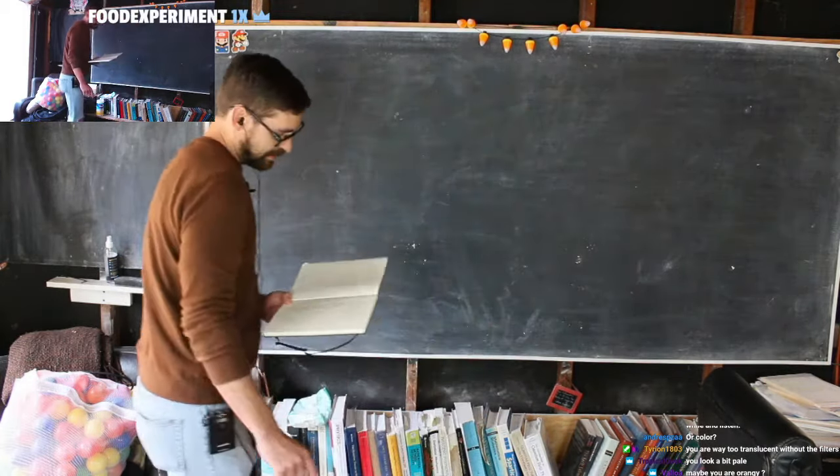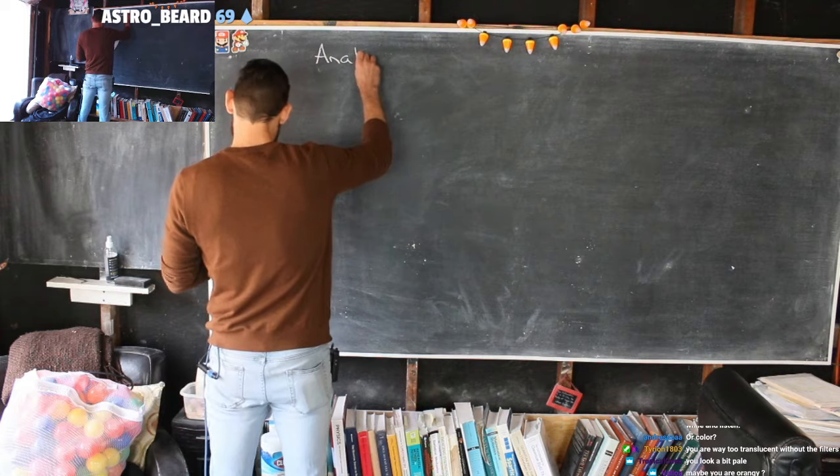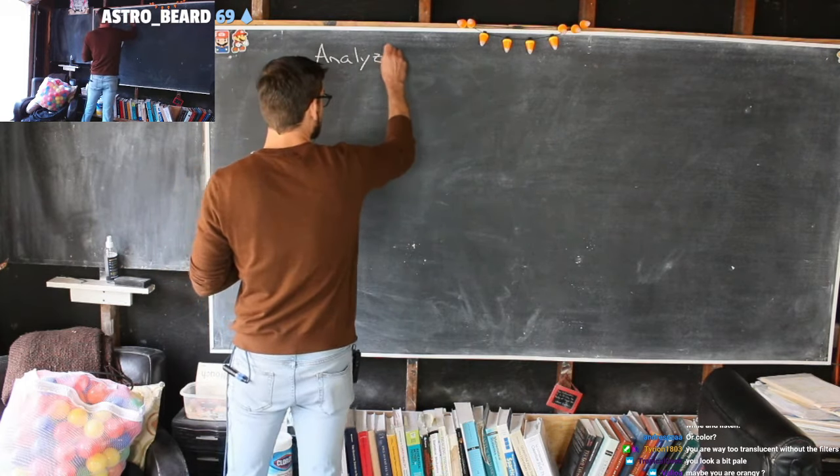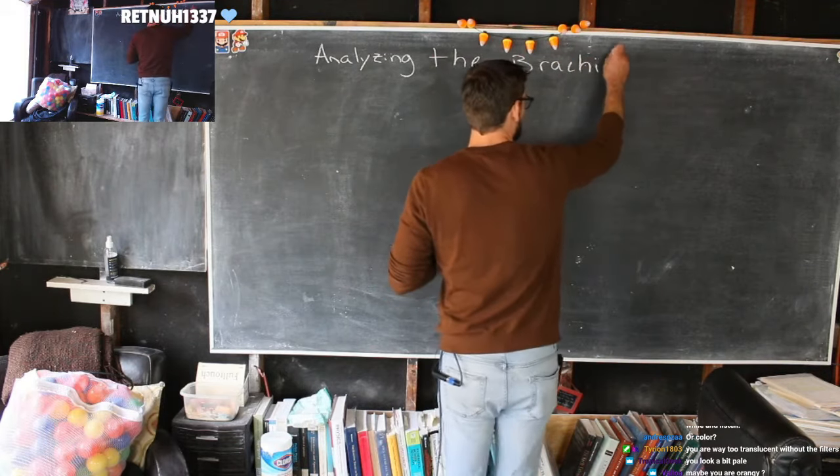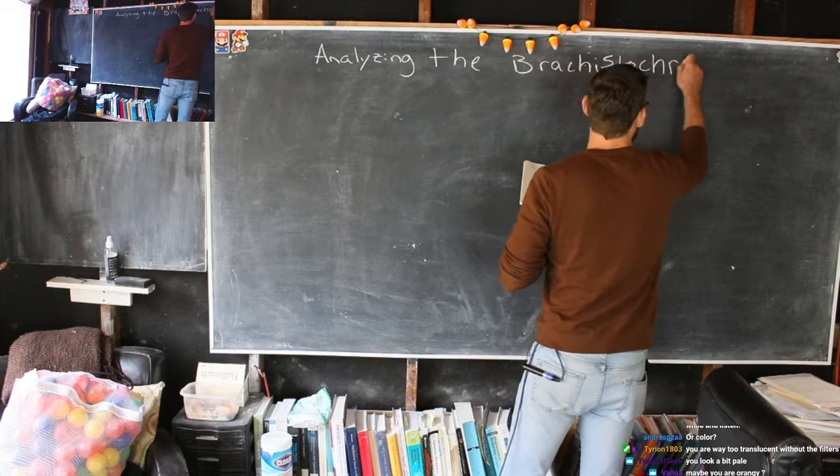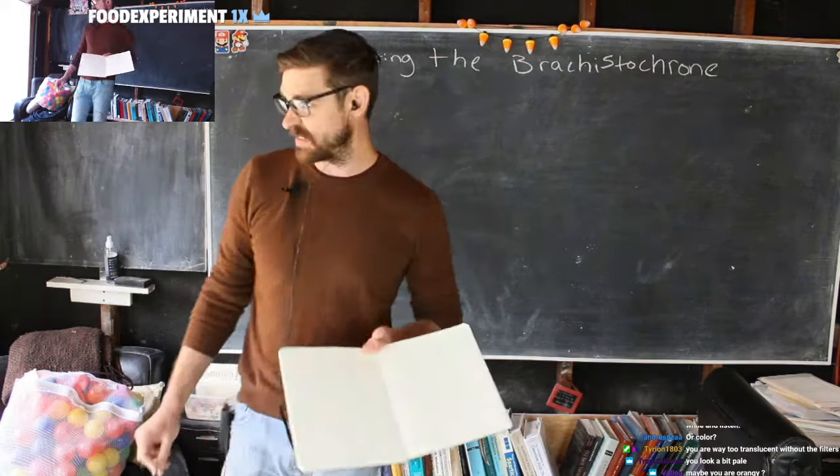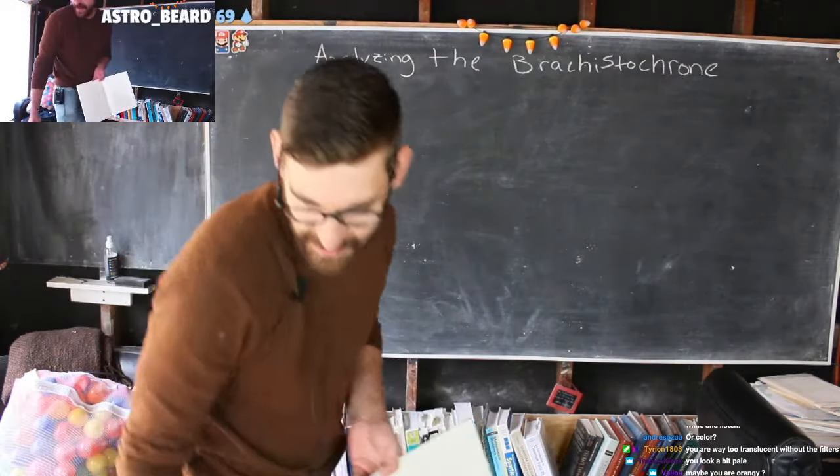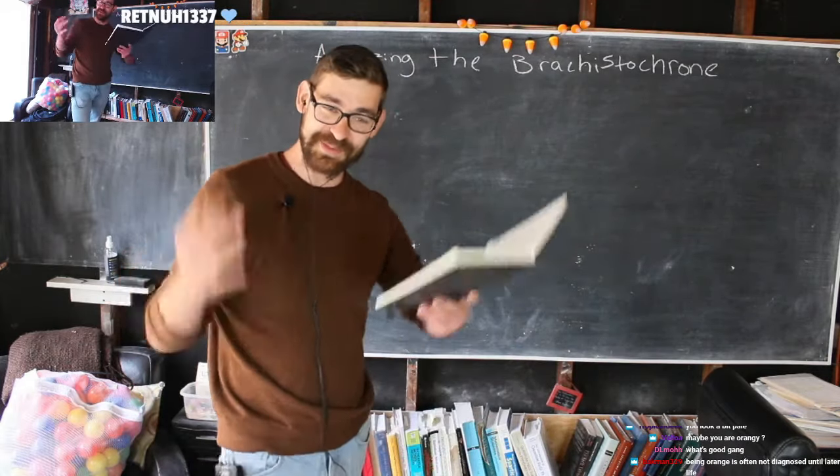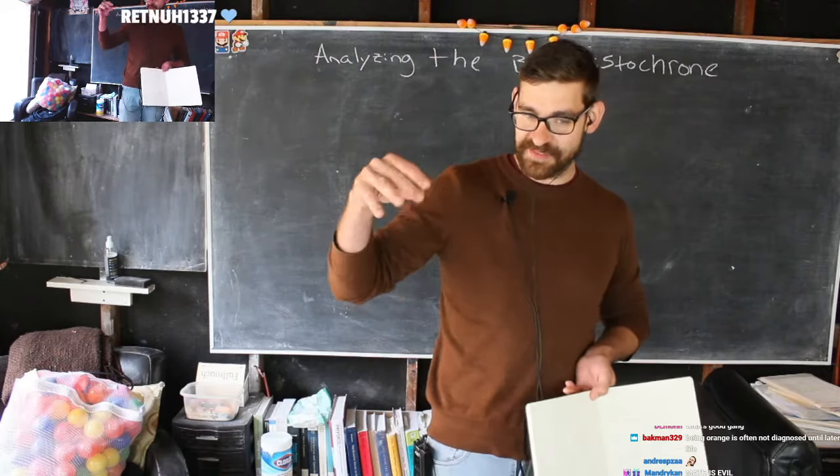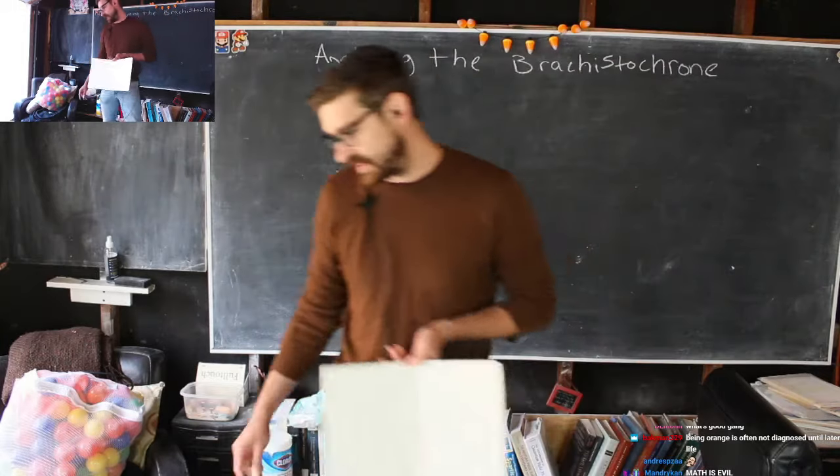So let's talk about what a brachistochrone is. Analyzing the brachistochrone. Now, it's definitely one of these mysterious puzzles. Math is evil. Math is not evil. If you would like to know more about the Lagrange mechanics, about the math that I'm talking about, we are doing a series on it Wednesday. Actually, this came up in the series.